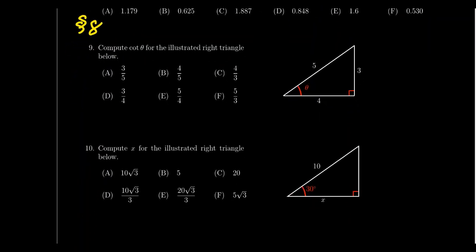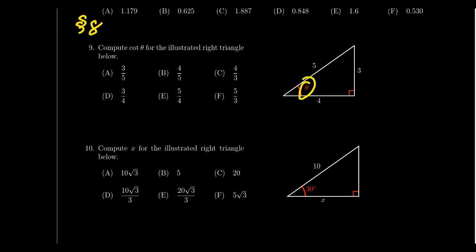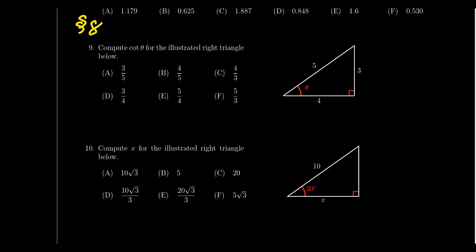Question number nine is right triangle trigonometry. You'll be given a diagram of a right triangle — do not assume it's drawn to scale. An angle θ is indicated, but you don't have its measure; you are asked to compute sine, cosine, tangent, cotangent, secant, and cosecant from the given triangle. You'll probably be given a Pythagorean triple like 3-4-5. If you know SOH-CAH-TOA, you'll be fine on this question.